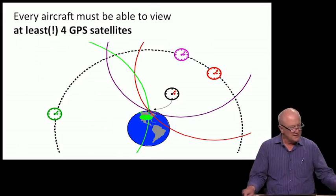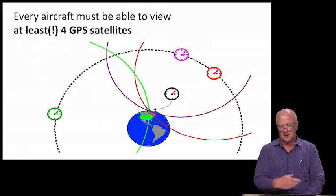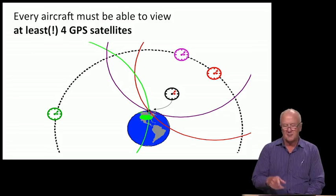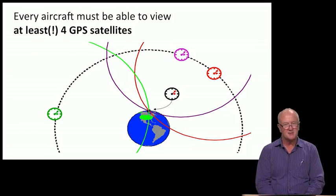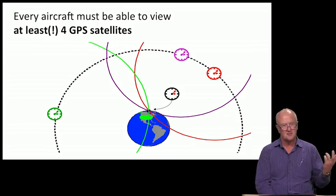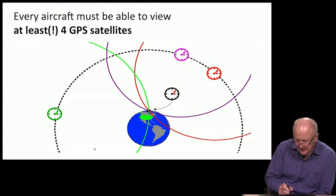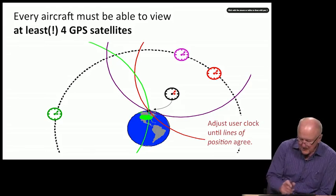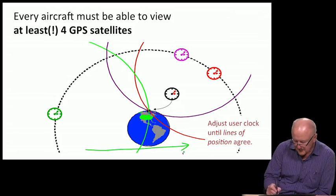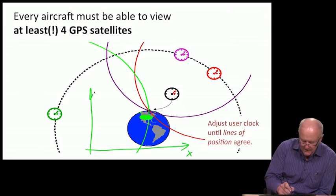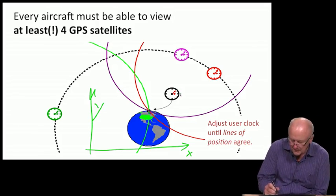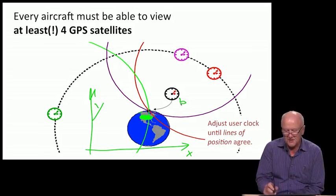Going back to GPS, if we're working a two-dimensional problem, we need at least three satellites—two dimensions of unknown location plus b. That's why we now have red, green, and purple as the satellites of interest.